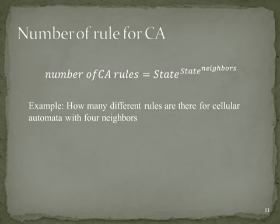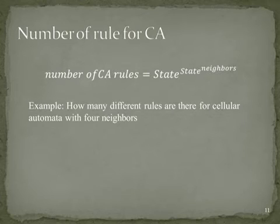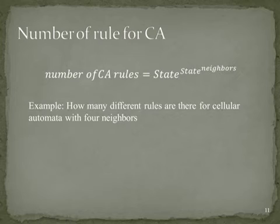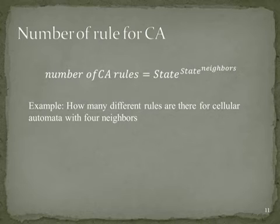If we want to calculate the number of rules for a cellular automaton, we can use the following formula: number of rules = states^(states^neighbors). For example, how many different rules are there for a cellular automaton with four neighbors? That gives us 2^(2^4), which we can calculate to get the result.